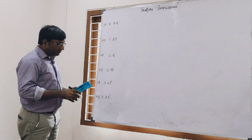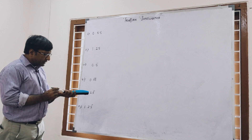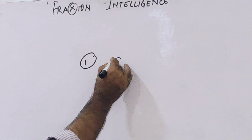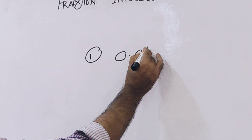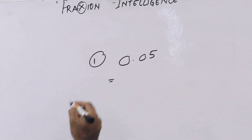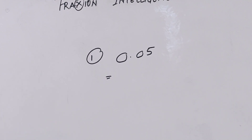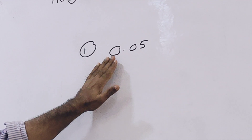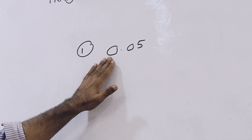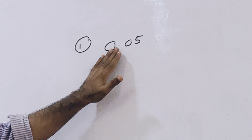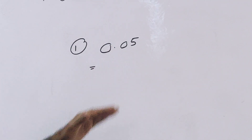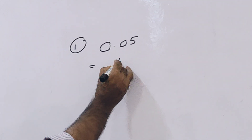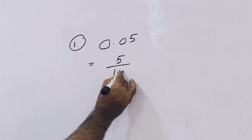The first question is 0.05. We have to change this number into a fraction. So what is the rule? Just see — there is no digit other than 0 before the decimal. So for 0.05, after the decimal point there is a 1 followed by two zeros.